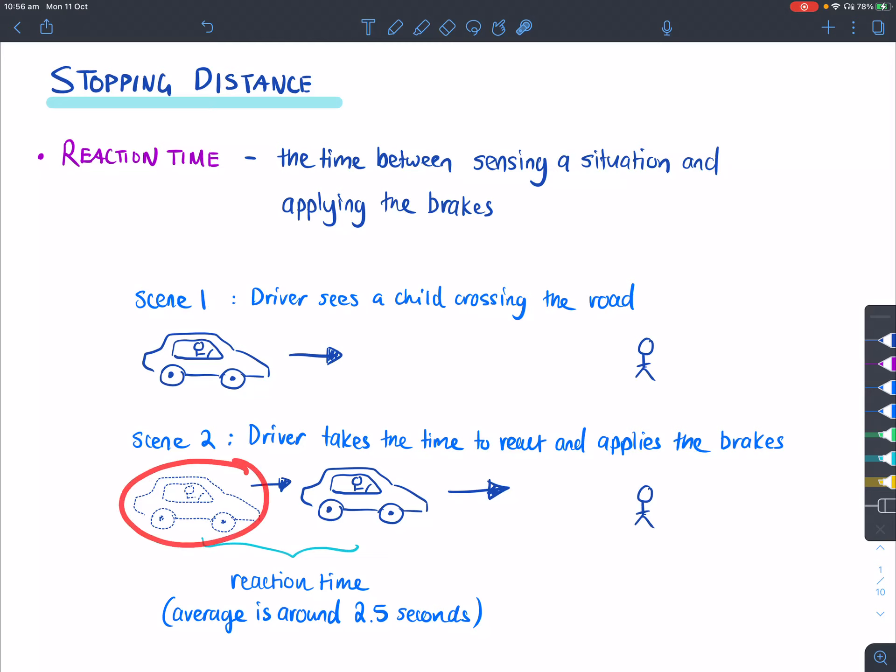So, between the time that the person sees the child and the person applying the brakes here, that is what we call the reaction time. And the average reaction time is around 2.5 seconds. It depends on how fast you are, and every person is different.